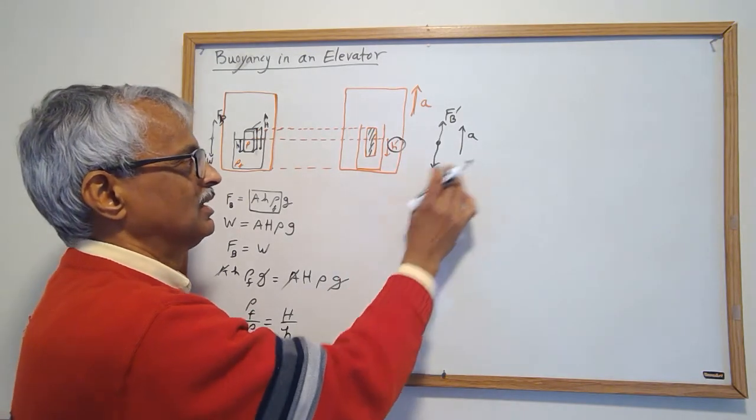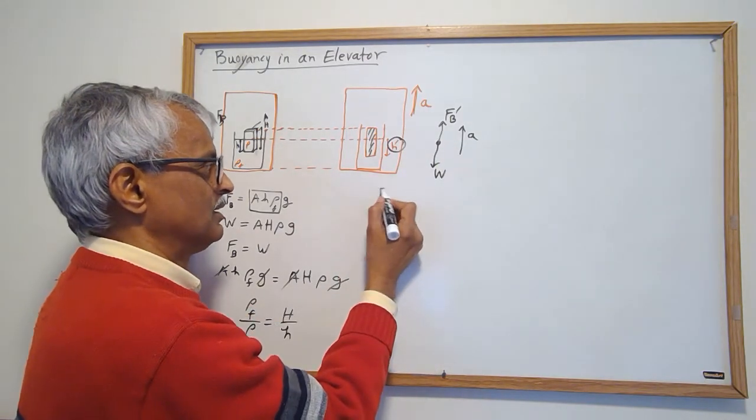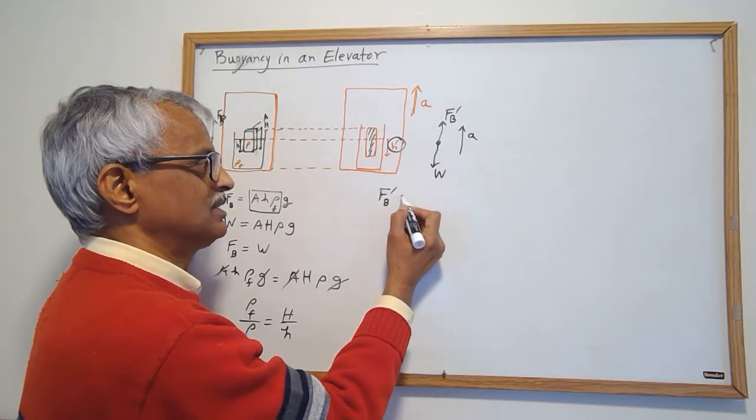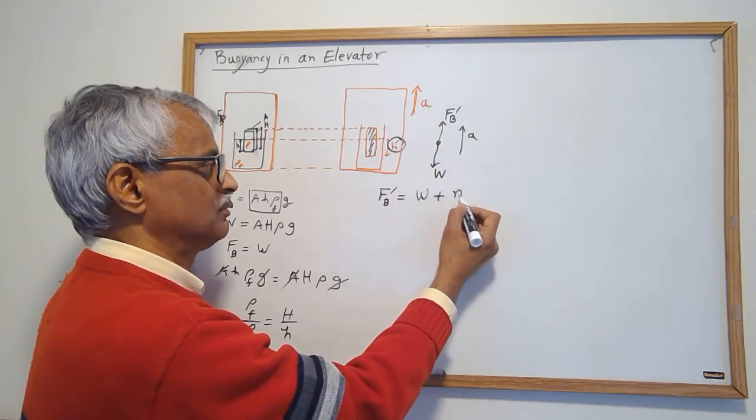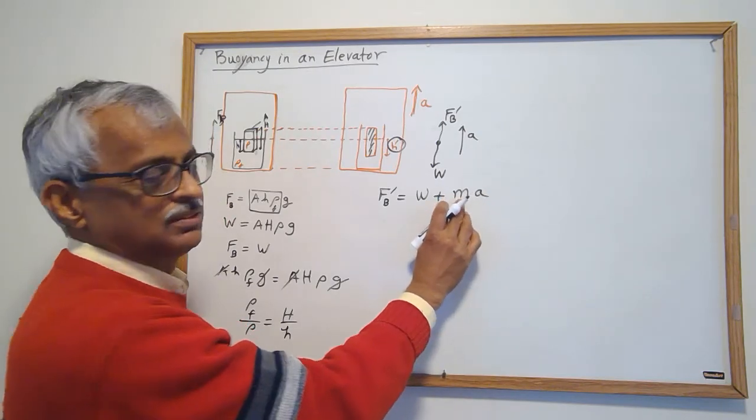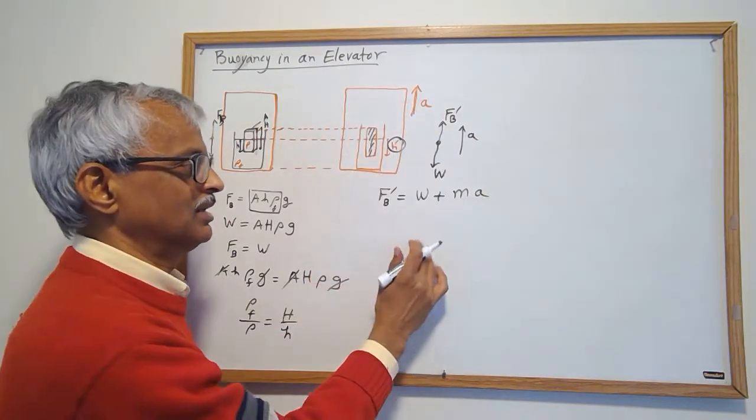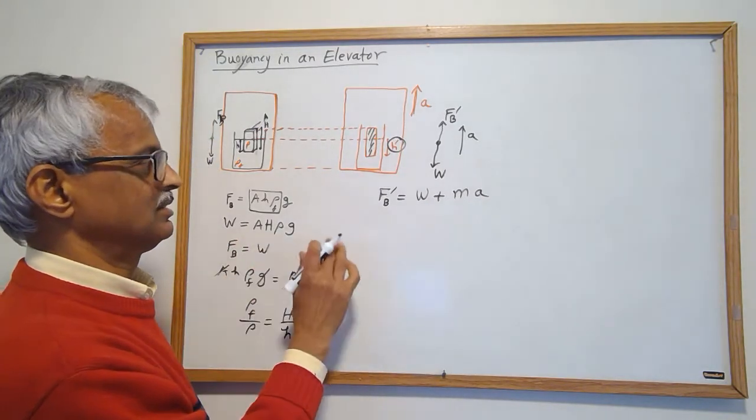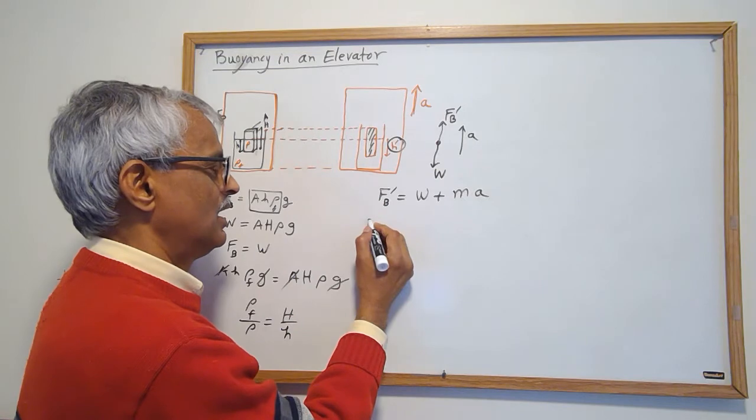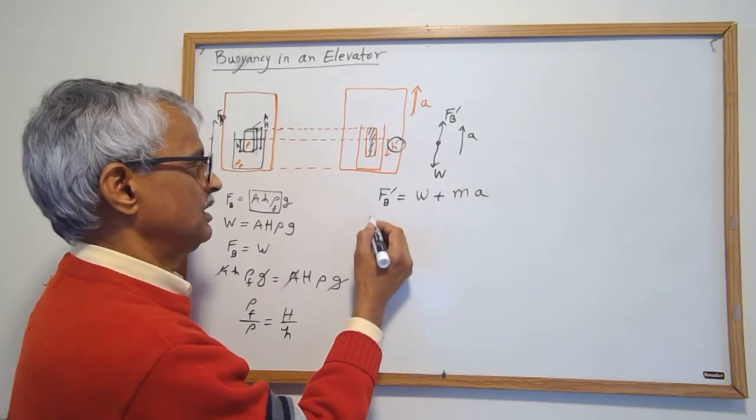So this is what I want to figure out by using buoyancy. This minus this, of course now the buoyancy is bigger because I got acceleration going. So buoyancy in this case is weight plus mass times a, and this is mass of not the displaced fluid, mass of the block itself.